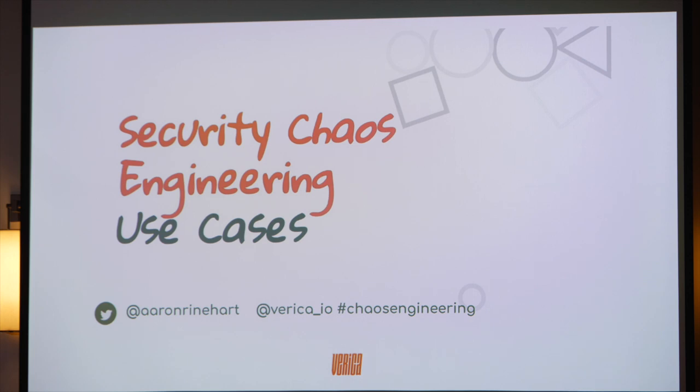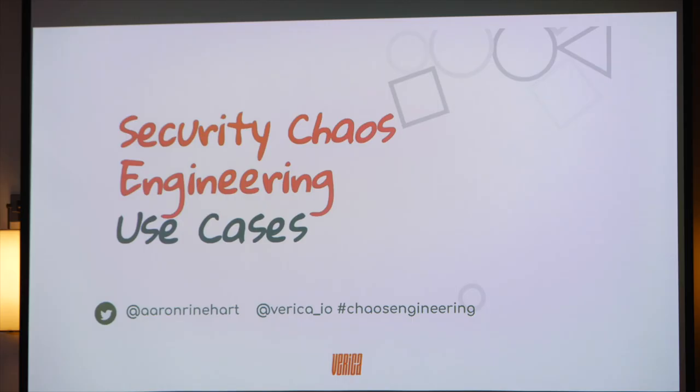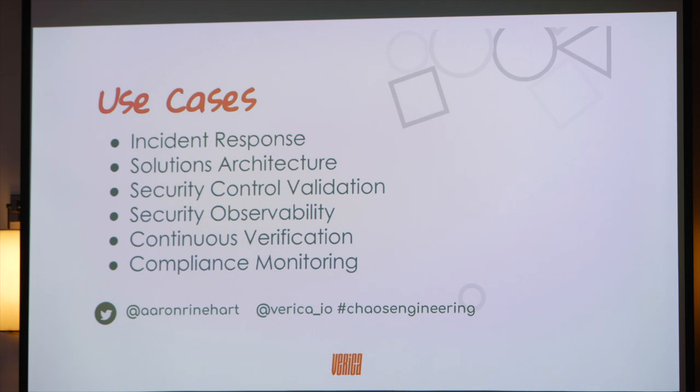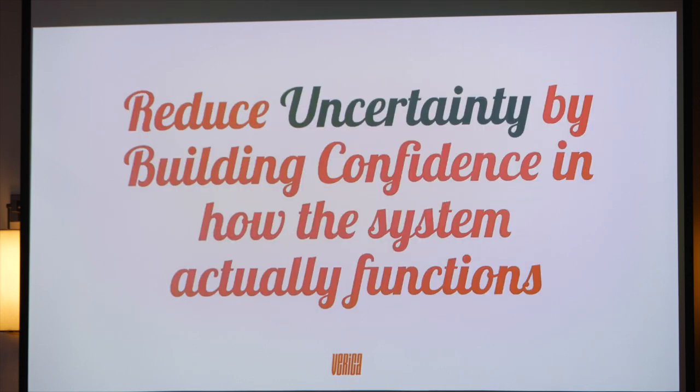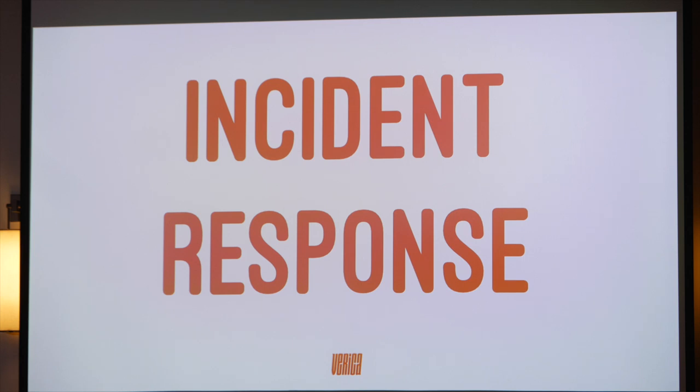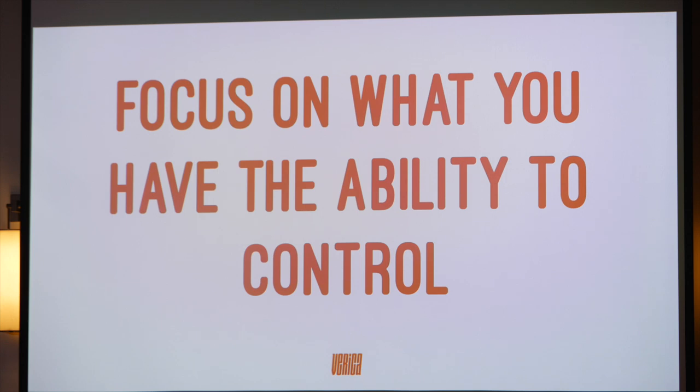Some of the security chaos engineering use cases — there's a coming O'Reilly book with more detail available at the Verica booth. The use cases I used it for were: to improve incident response, to validate that architecture was as effective as I had designed it, to validate security controls, to improve security observability and determine the quality of log events during certain types of outages and incidents, as well as to continuously verify in a regression-type testing approach. Every chaos experiment also has compliance value.